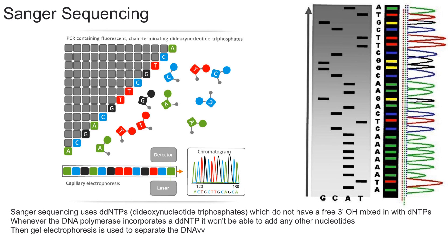However, in this case we have DDNTPs which don't have a three prime OH. So essentially what's going to happen is once this DDNTP is incorporated into the DNA strand it's going to stop — you can't add any more nucleotides in after this DDNTP is added.